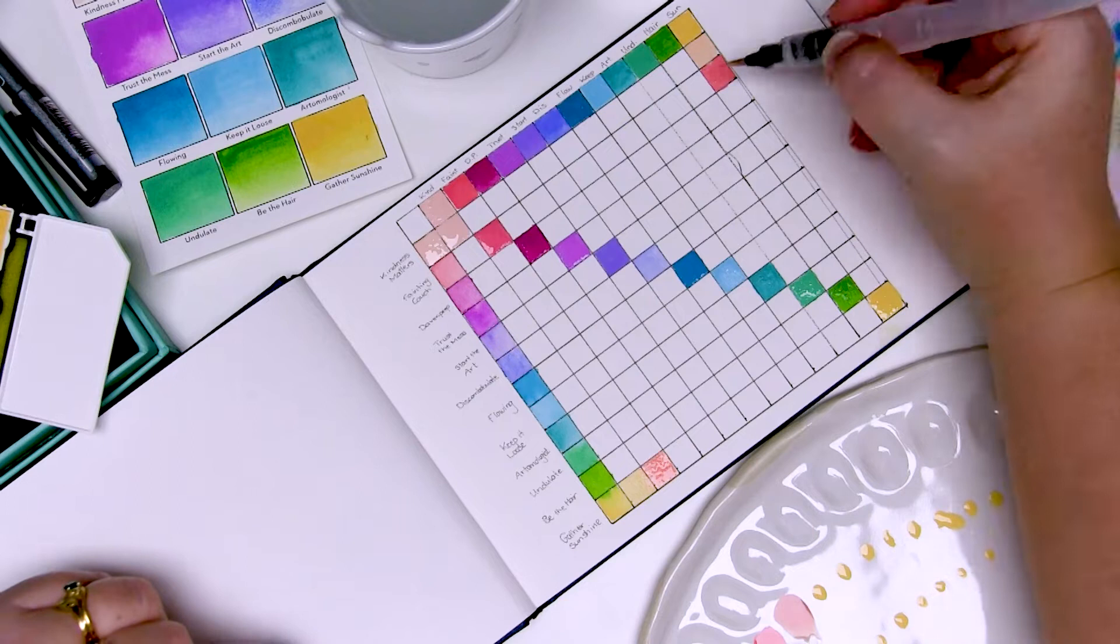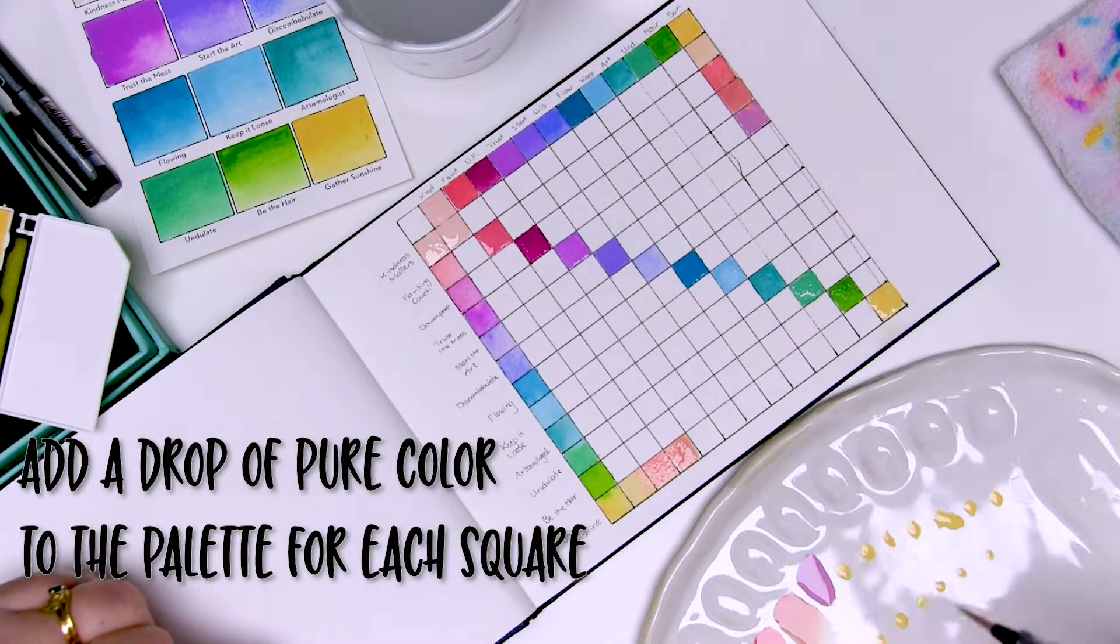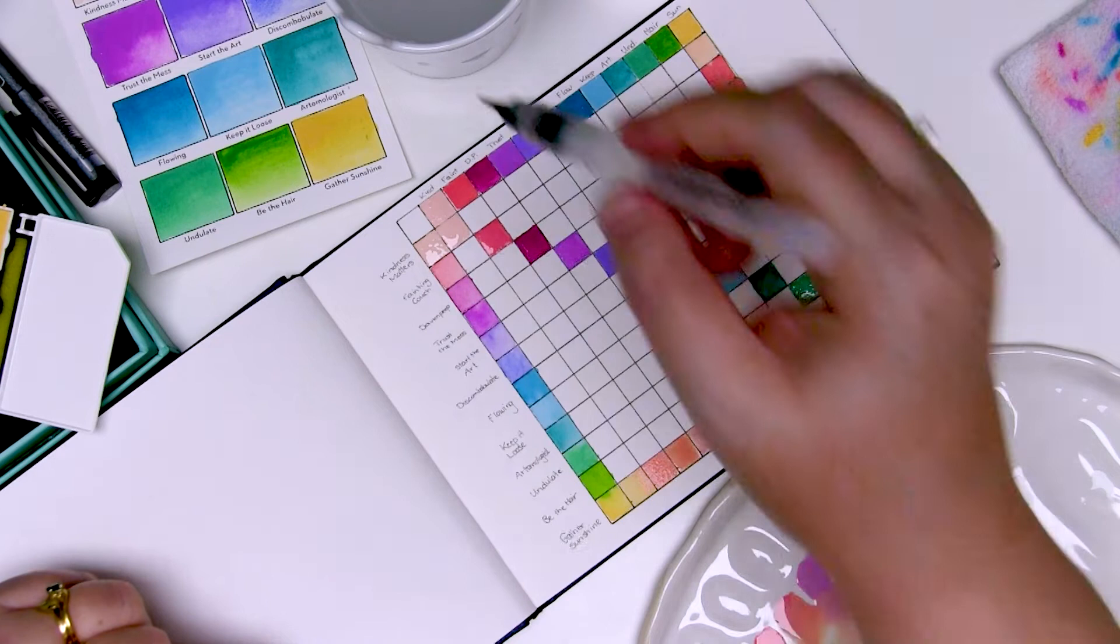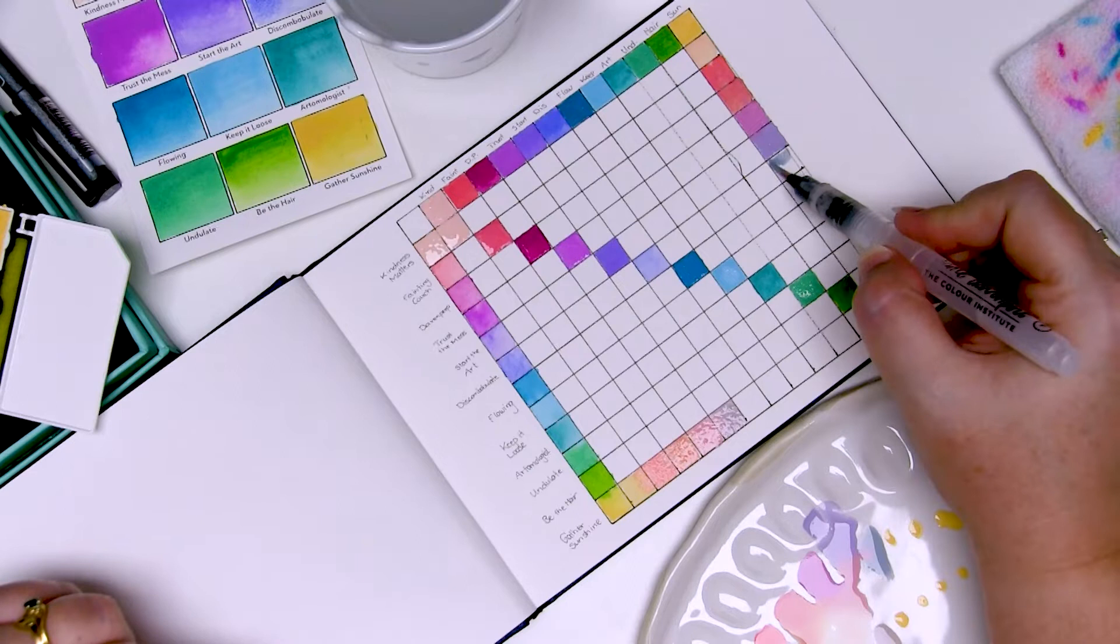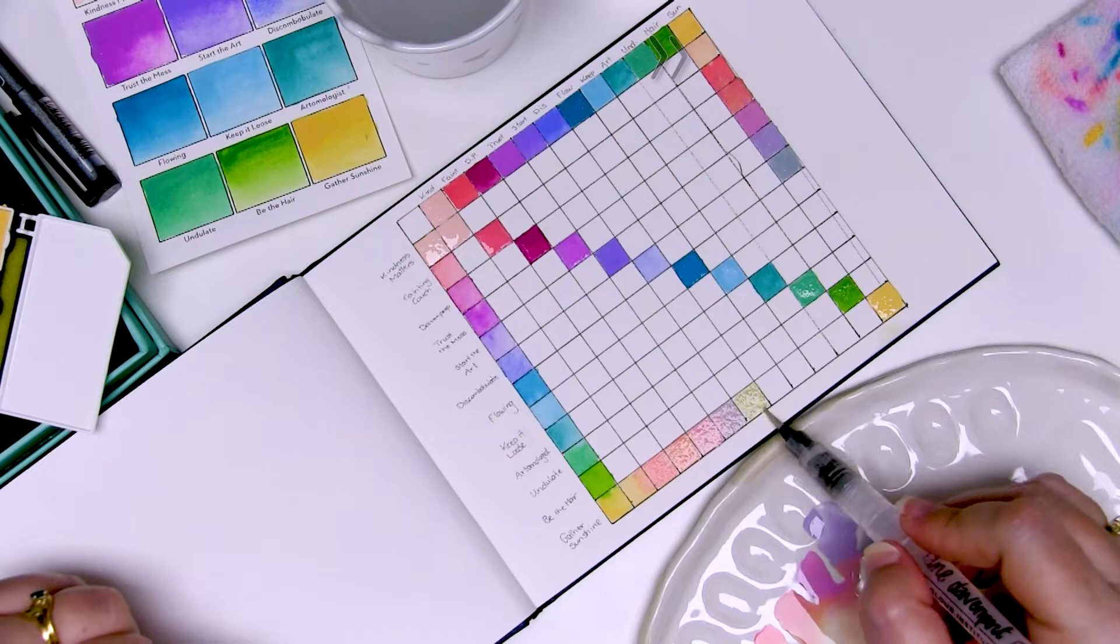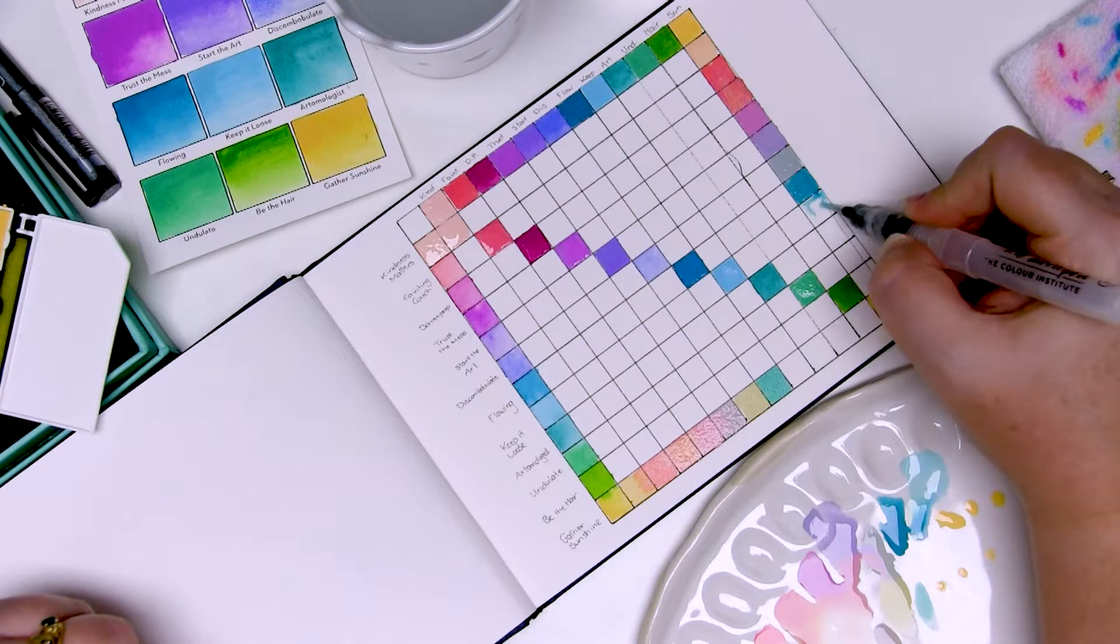Once that's done, it's time to start mixing the colors together to see what other colors you can make from the set. So what I've done is I've put one little drop of pure color on my palette for each square I need to color in for that color. So for Gather Sunshine I've got 12 boxes down I need to color and 12 across, so I've got 24 little spots of Gather Sunshine on my palette. I'm going to grab Kindness Matters and add that to one spot of color, making sure that the Kindness Matters is the most dominant color, and then put that in the first row down where I'm mixing Gather Sunshine and Kindness Matters.